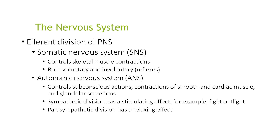The somatic controls skeletal muscle contractions, both voluntary and involuntary reflexes. The autonomic controls subconscious actions, contractions of smooth and cardiac muscle, and glandular secretions. The sympathetic division has a stimulating effect — for example, fight or flight — and the parasympathetic division has a relaxing effect.